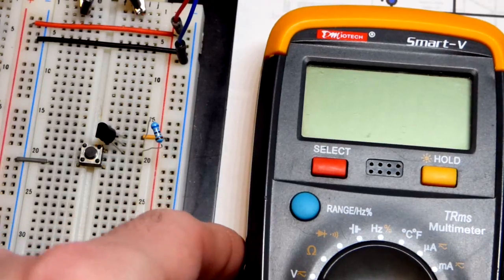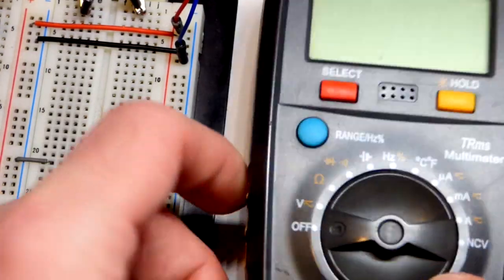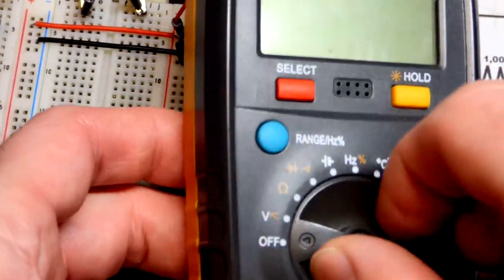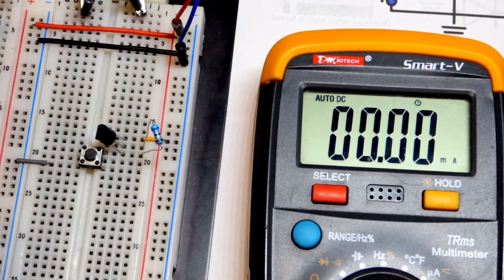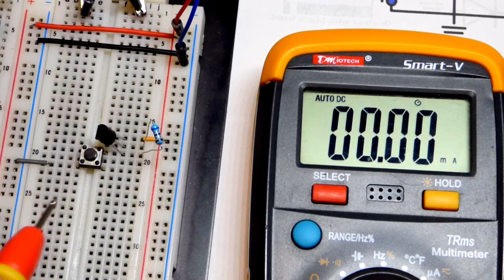And so of course we can check that with the multimeter here, so I'll set this to milliamps right there. And the nice thing about switches is you can just connect across them.